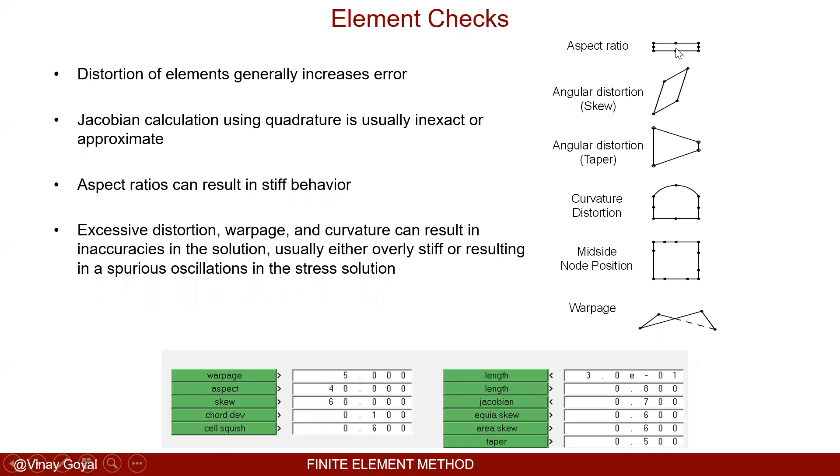The aspect ratio can result in stiff behavior. If I have an aspect ratio that's quite dramatic, that will really result in stiff behavior. Excessive distortion, warpage, and curvature can result in inaccuracies in the solution and lead to a lot of problems. Here you can see warpage being a problem where these nodes are just all over the place.